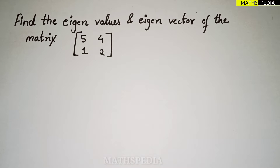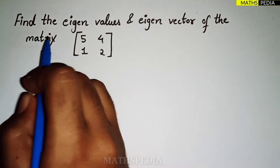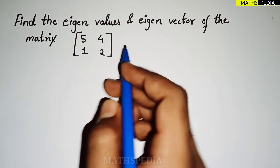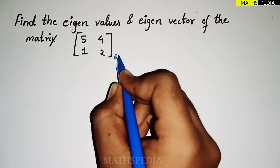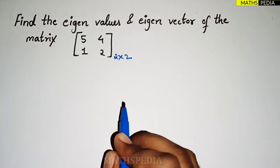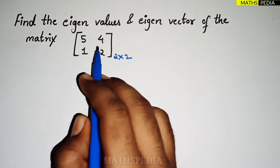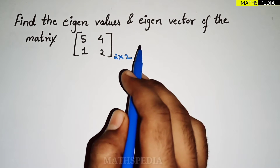Hello guys, in this video we'll learn how to find the eigenvalues as well as the eigenvectors. Let us say the question is: find the eigenvalues and eigenvectors of this matrix — a 2×2 matrix — for which we are going to find out the eigenvalue as well as the eigenvector.